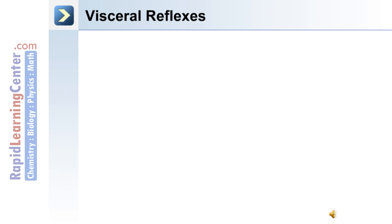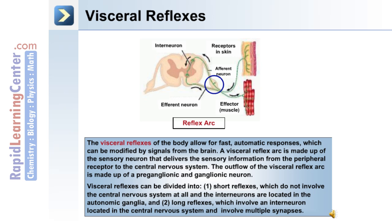The autonomic nervous system provides for visceral reflexes. Visceral reflexes allow for fast, automatic responses which can be modified by signals from the brain. A visceral reflex arc is made up of a sensory neuron that delivers sensory information from the peripheral receptor to the central nervous system, and the outflow is made up of a pre-ganglionic and a ganglionic neuron. Visceral reflexes are divided into short reflexes, which do not involve the central nervous system and have interneurons located in the autonomic ganglia, and long reflexes, which involve an interneuron in the central nervous system as well as multiple synapses.